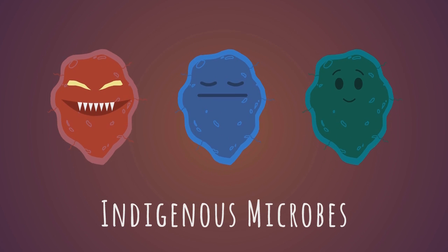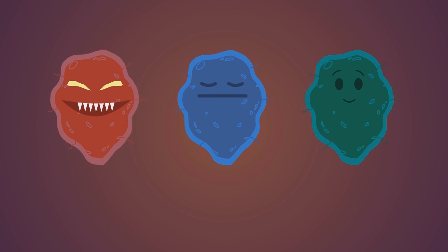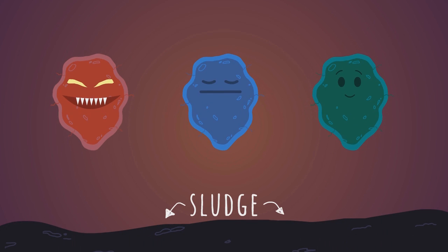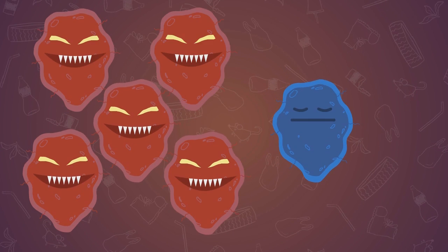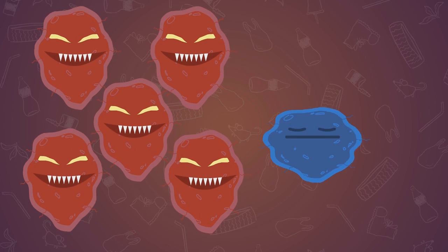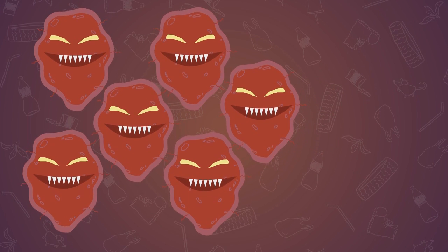Here's how. In the environment, there are harmful, beneficial, and neutral indigenous microbes. Harmful and beneficial indigenous microbes like to eat sludge. If there's more pollution, harmful microbes increase, and the neutral microbes turn harmful as well.